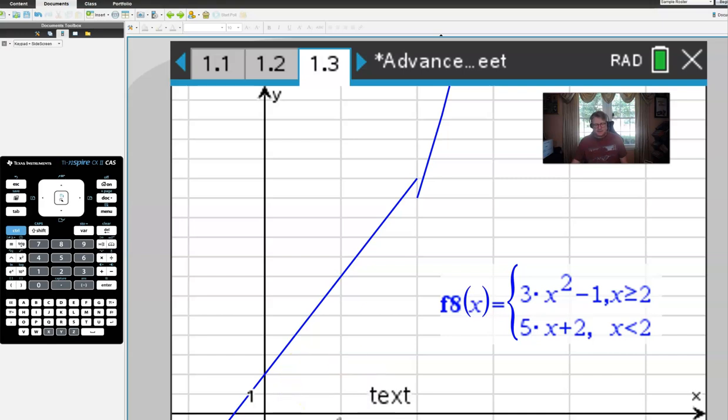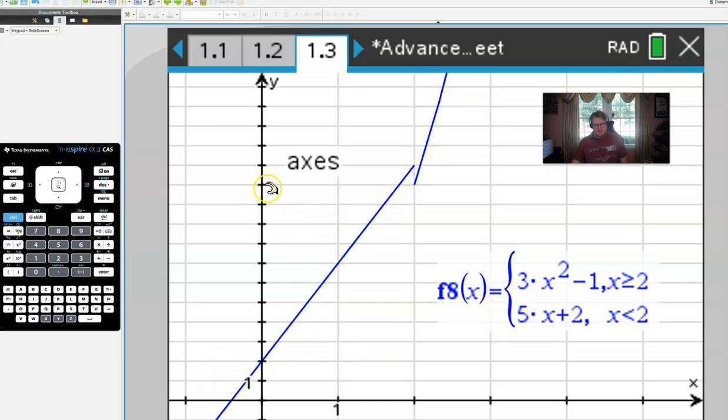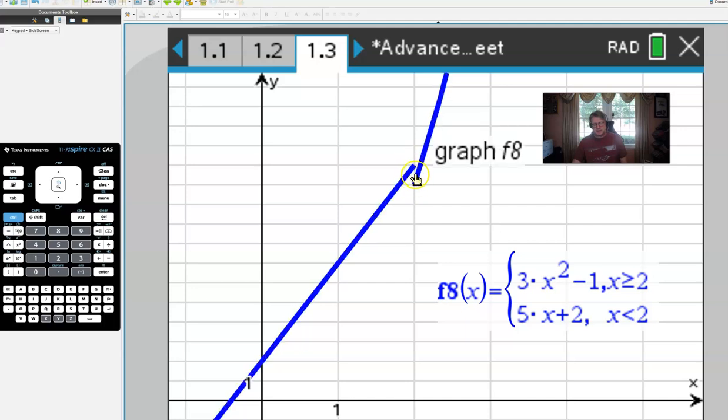And to save you the agony of having to count the lines and whatnot, what we can see here is that 11 would have been the answer to the right hand limit which is right there, 12 is the answer to the left hand limit, and you can see that these do not meet up.